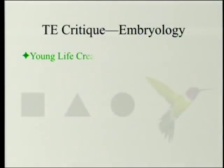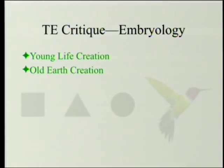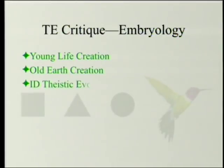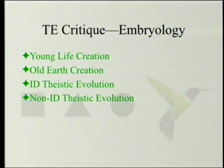The book was intended to look at several ways of looking at how life developed. There's young life creation, which can be further subdivided. There's old earth creation — or really it should be old life creation. There is theistic evolution where you can tell God did it, intelligent design theistic evolution, and non-intelligent design theistic evolution — where it looks like God wasn't involved, but he really was.